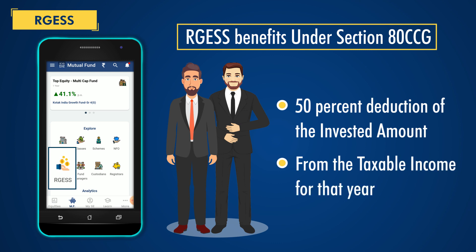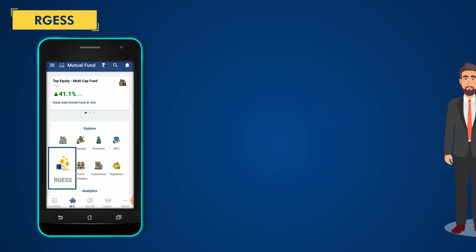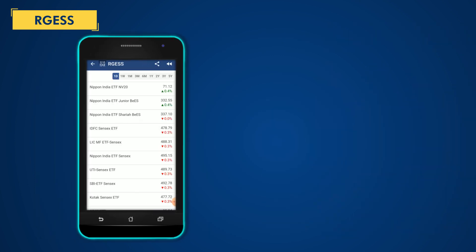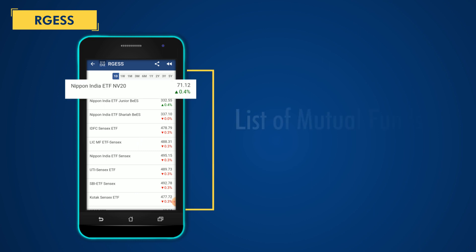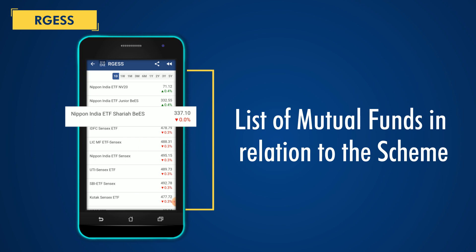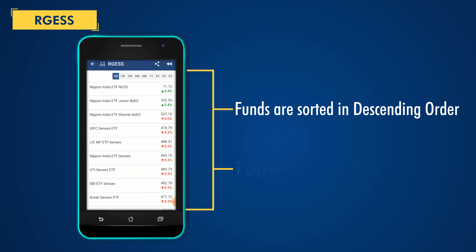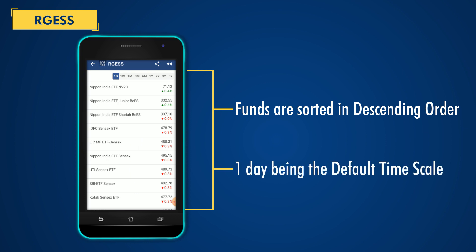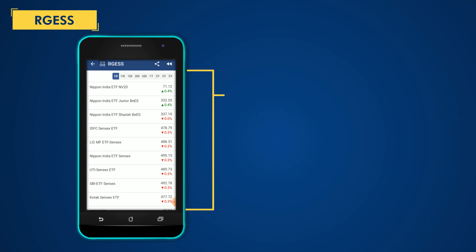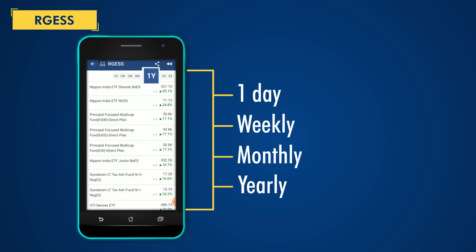So this icon would be helpful to all investors who are looking to take advantage of this government scheme. When you click on the RGESS icon, the first page that opens will contain a list of mutual funds in relation to the scheme. The funds are sorted in descending order of their returns, with one day being the default timescale. You can change the tenure from one day to a weekly, monthly, or yearly timescale too.